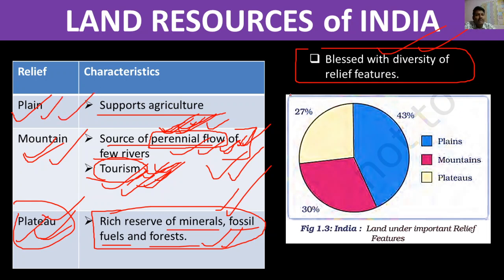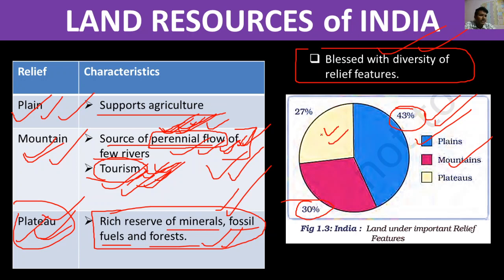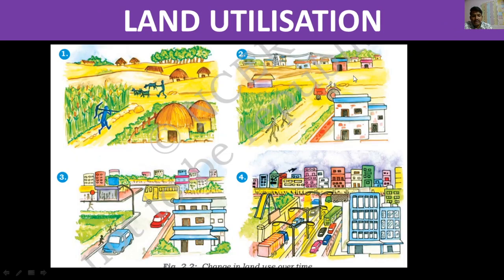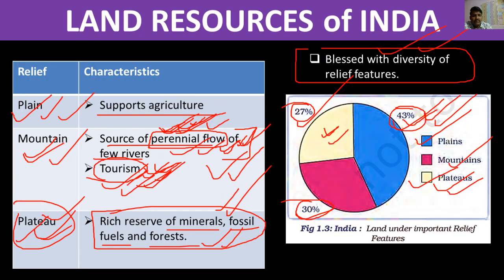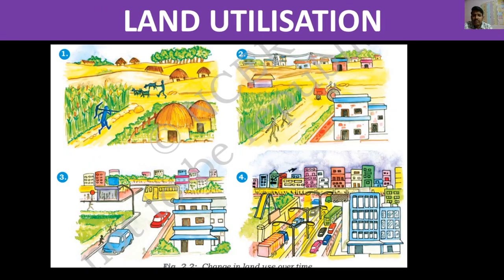Ab data dekhte hain — sabse zyada area kaun sa hai. Blue jo hai, plain ka 43 percent total land area ka, woh plain hai bachon. Uske baad 30 percent jo hai woh mountain hai. Aur jo thoda light yellow hai, woh plateau hai — 27 percent. Toh sabse jyada plain, doosre number pe mountain 30 percent, aur teesre pe plateau 27 percent.